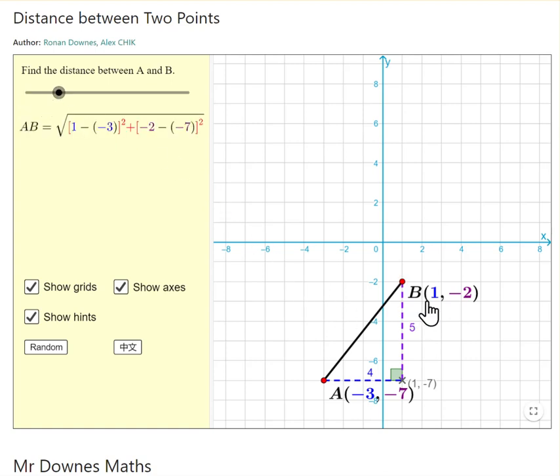You're getting the difference between the x's, which is 1 take away minus 3. And of course, because you're after climbing back this one here, you're climbing back another three. It makes sense that minus minus 3 is plus 3. So you'll have a 4 squared here.